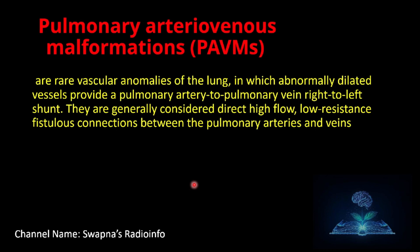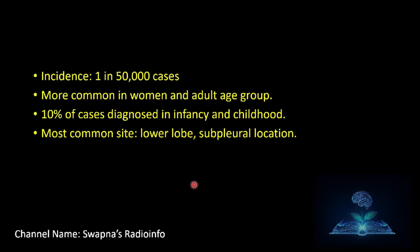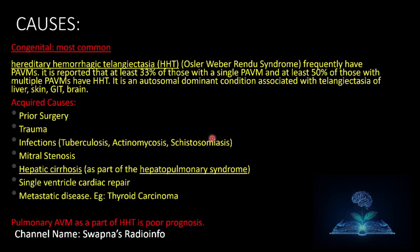Discussion: pulmonary arteriovenous malformations are rare vascular anomalies of the lung in which abnormally dilated vessels provide a pulmonary artery to pulmonary vein right-to-left shunt. They are generally considered direct high-flow, low-resistance fistulous connections between the pulmonary arteries and veins. Incidence is 1 in 50,000 of all cases, more common in women and the adult age group, with 10% of cases diagnosed in infancy and childhood. The most common site is the lower lobe in a subpleural location.